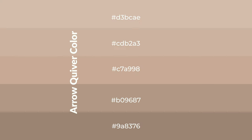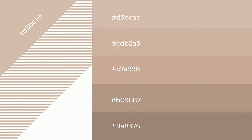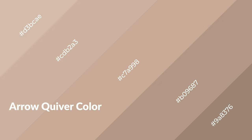To generate shades of a color, we add black to the color. Shades are used in patterns and 3D effects. Layers and shades create depth and drama. Arrow quiver is a warm color and it emits cozier and active emotions.